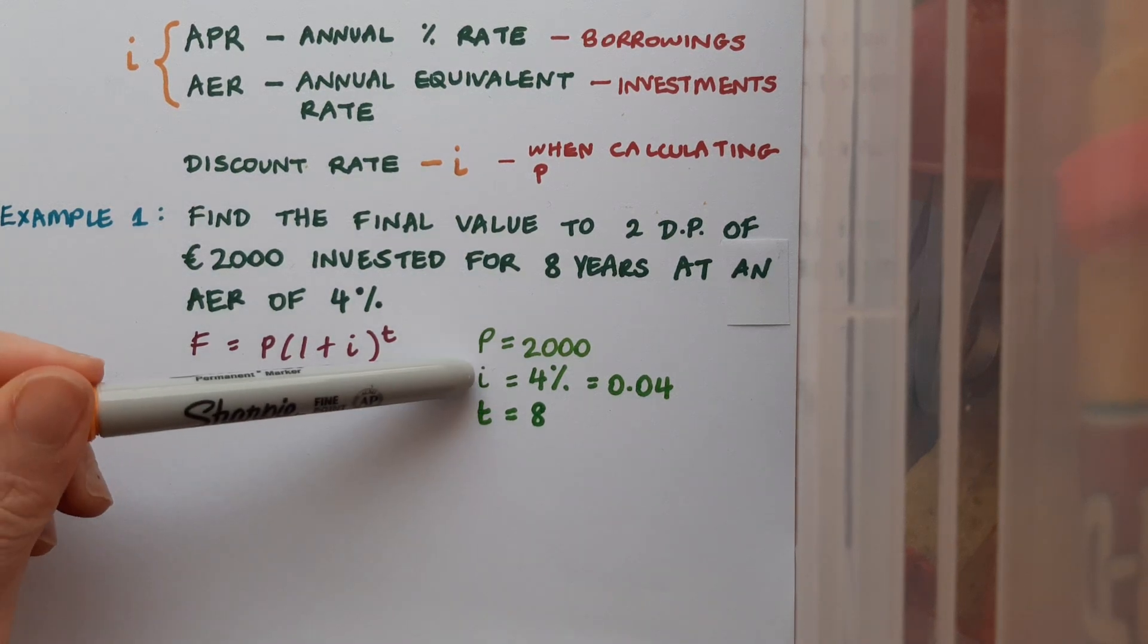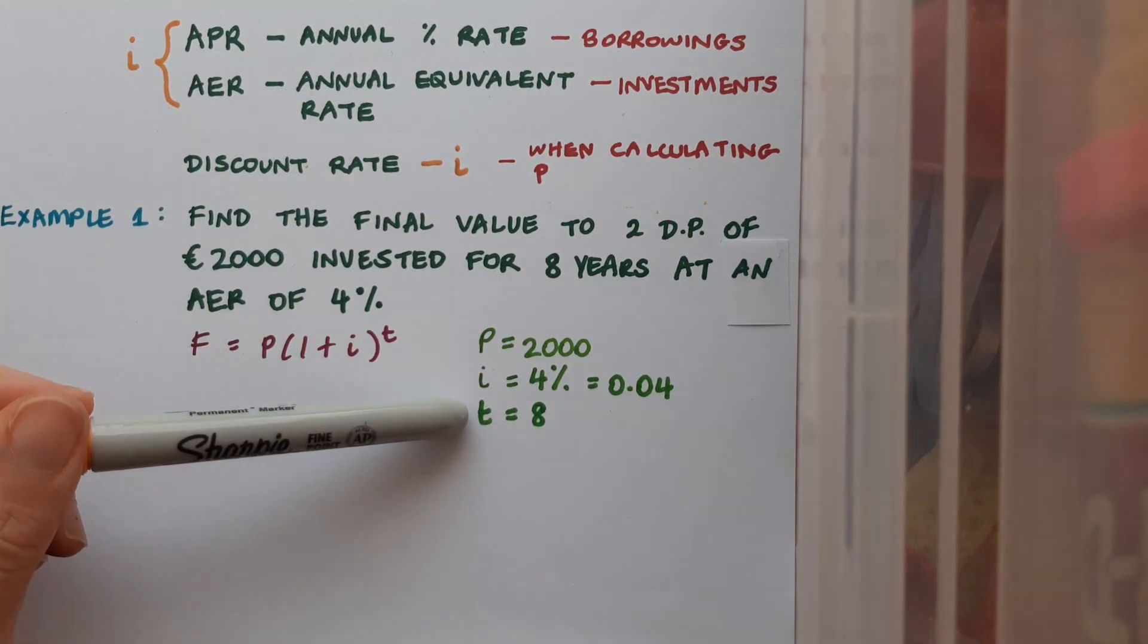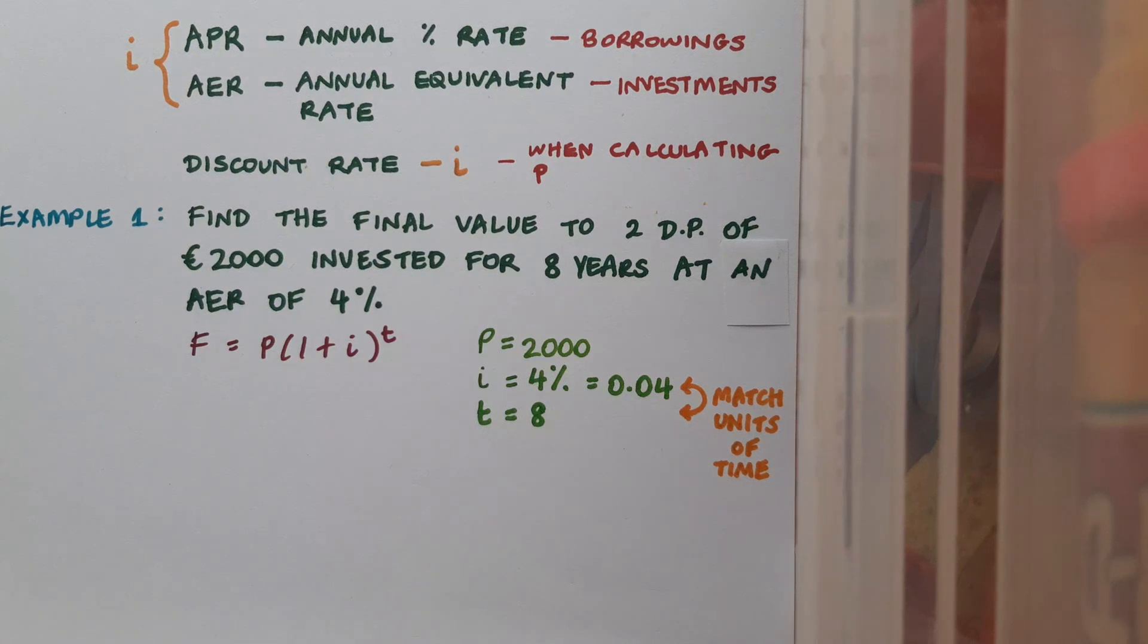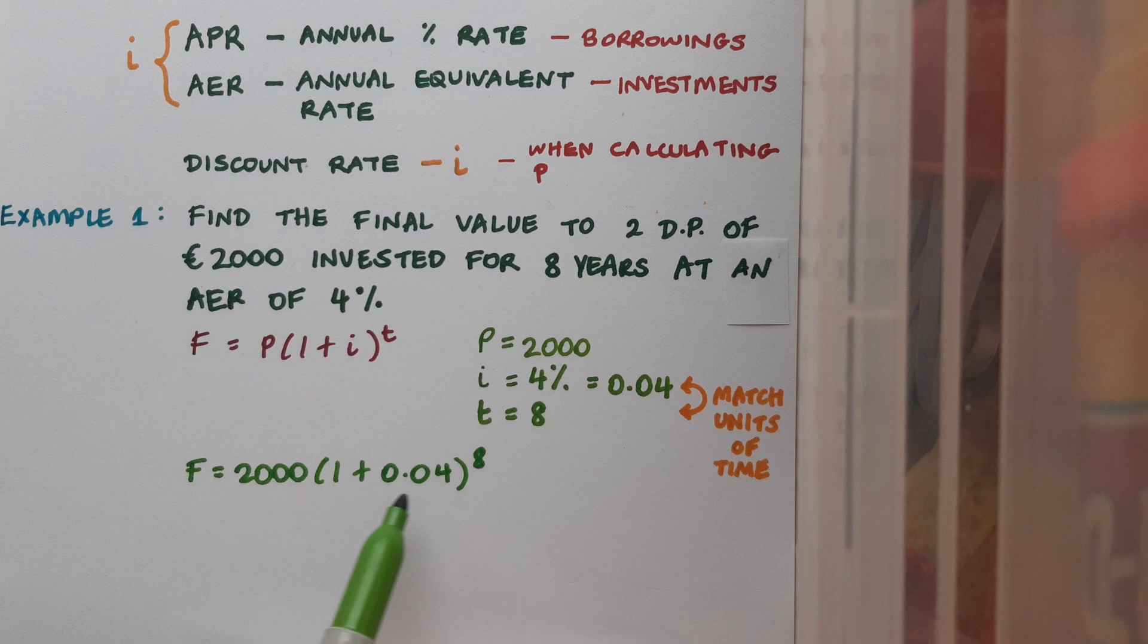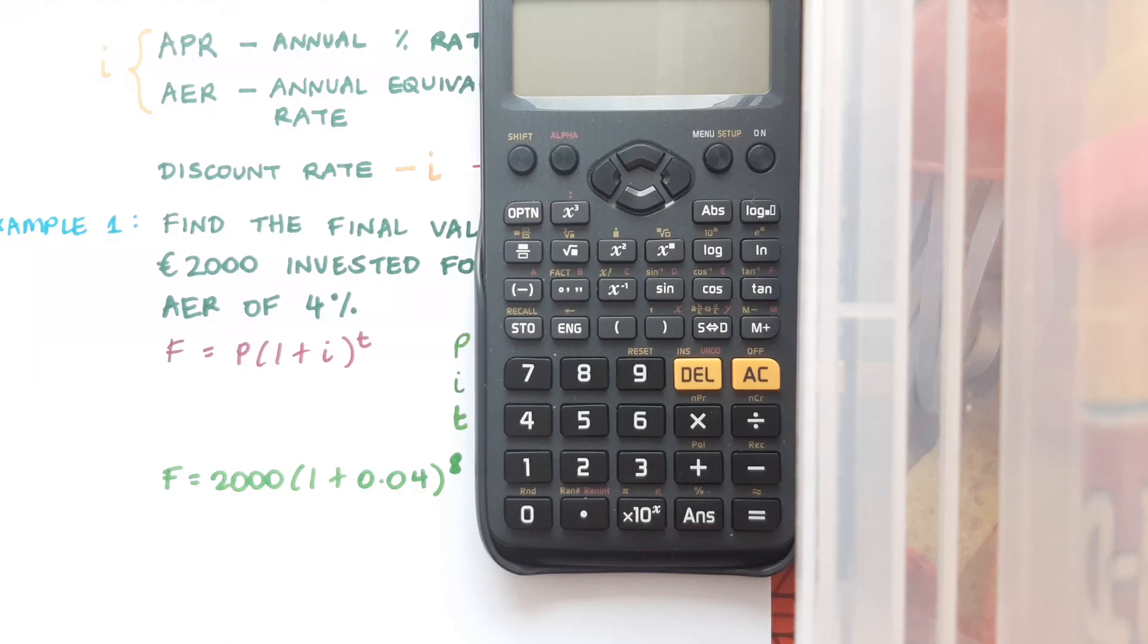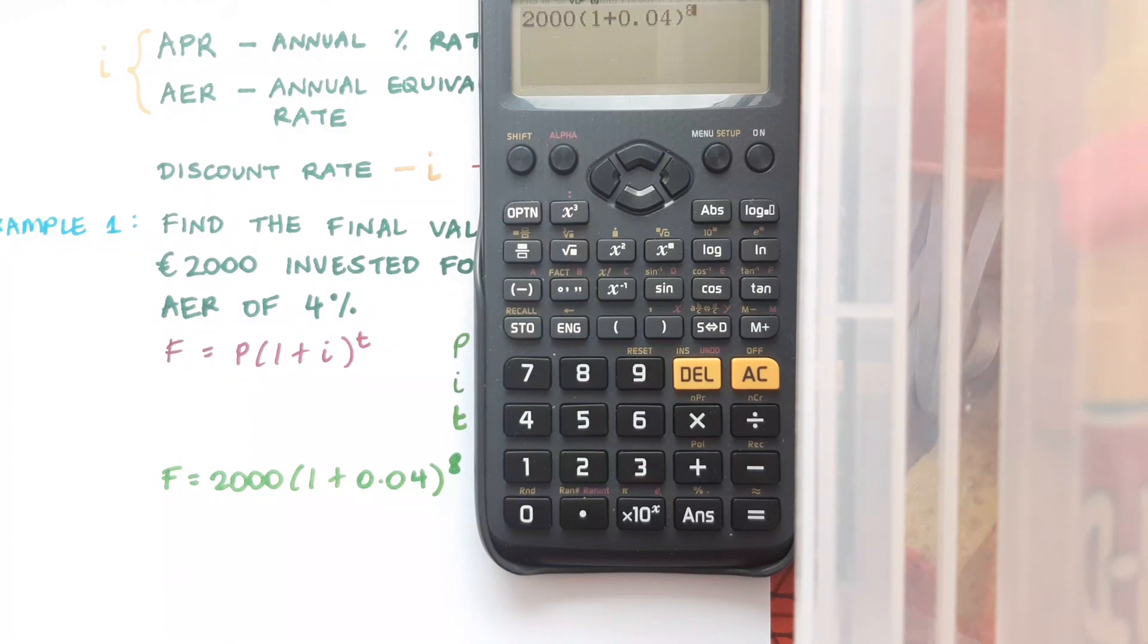Notice that the interest rate is an annual rate and t is in years. It's important that I have matching units of time for these two things. And then I'll just fire it into the formula. So that's 2000 times one plus 0.04 to the power of eight. You can write this value as 1.04 if you like as well. And then we'll go to our calculator and type it in exactly as you see it on the page.